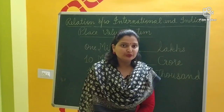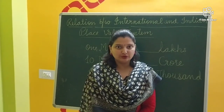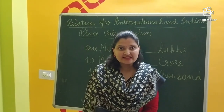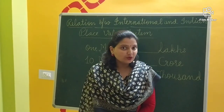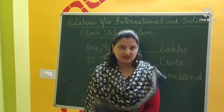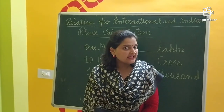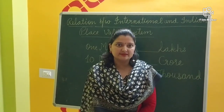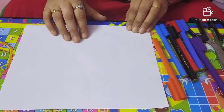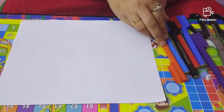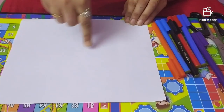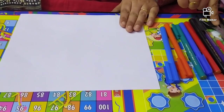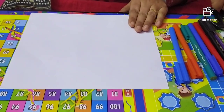I have a surprise for you — we are going to do an activity which shows us the relation between both the systems. Things required for this activity are: an A4 sheet, colors, pencil, scissors, fevistick, and a scale.